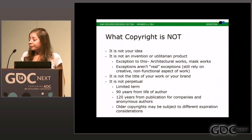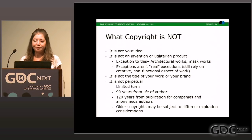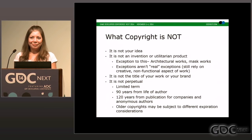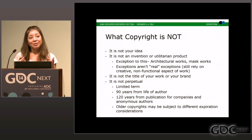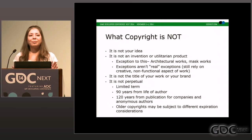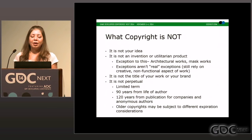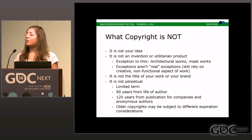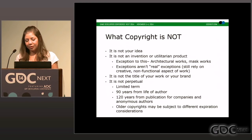Also, copyright is not perpetual — you have a limited term: 90 years from the life of the author, or 120 years from publication. A great example relevant to games is game mechanics versus creative content. Mechanics are never going to be copyrightable because they are a method, a process — something useful. But the creative elements — the characters, your story, the world you create, the music you use — these are things that are copyrightable, make your work distinctive, and give you the protection you want.